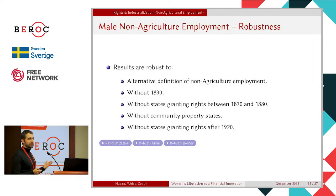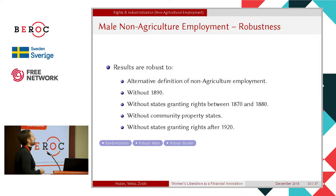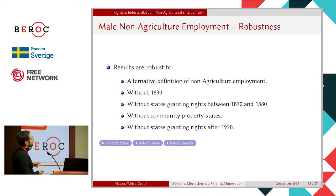I'll just quickly mention the robustness exercises: alternative definitions of non-agriculture — for instance, dropping retail since women had rights over real estate and might have owned a shop; dropping 1890 data since a fire destroyed all that census data and it's interpolated; dropping states that granted rights between 1870 and 1880 — about a third of states; and dropping states that granted after 1920 or operated on civil law. Nothing is that important — the point remains.